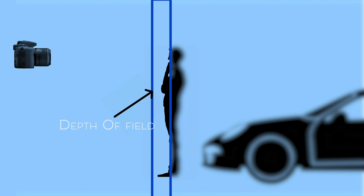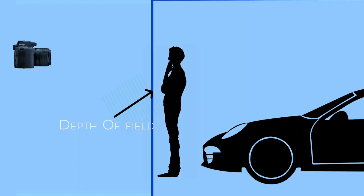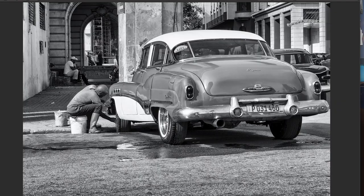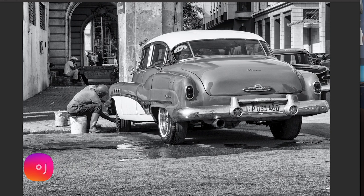A shallow depth of field has only your subject in focus, and a deep depth of field has your subject and the background both in focus. Portraiture is a great example of where you would want a shallow depth of field — f-1.4, f-2.8, and so on, the lower end of the scale. The exception for portraiture would be an environmental portrait, which is a portrait that tells the story of the person and their environment. Here's a picture where I used a high f-stop because I wanted both the car and the subject in focus.